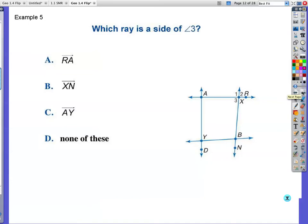Example number five. Which ray is a side of angle three? So let me highlight angle three. Which ray? So I have ray RA. Well, R starts back here. I don't like that one because that one does not have an end point at the vertex. Ray XN starts here and it goes through this. So that looks to be pretty good. Let me just check AY. AY is over here. I also don't like that one. That one doesn't have anything to do with angle three. So we're looking at answer B, ray XN.